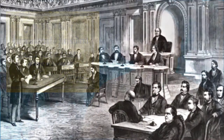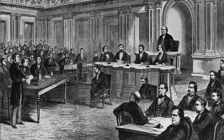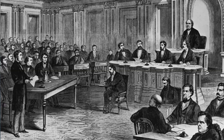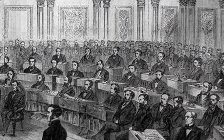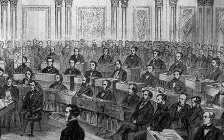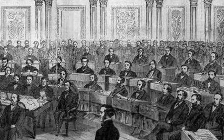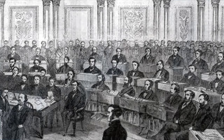The defense argued that Johnson had done nothing wrong because Lincoln had not officially reappointed Stanton before his death. The prosecution argued that Johnson had blatantly defied Congress by dismissing Stanton and ignoring the Tenure of Office Act. At the time, there were 54 senators from 27 states, and 36 votes were needed to achieve a two-thirds majority.